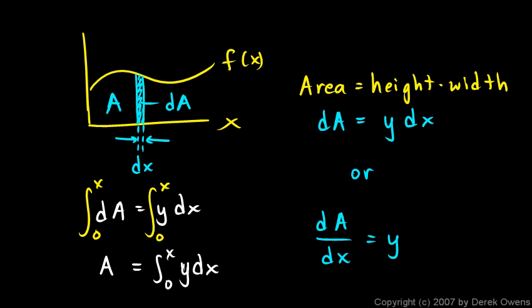So we can say that A is the integral from 0 to x of y dx. That is, the area under the graph at some point x is found by taking the integral of our function y, or again, if you prefer, our function f(x). And now there's just one more step in our thinking.